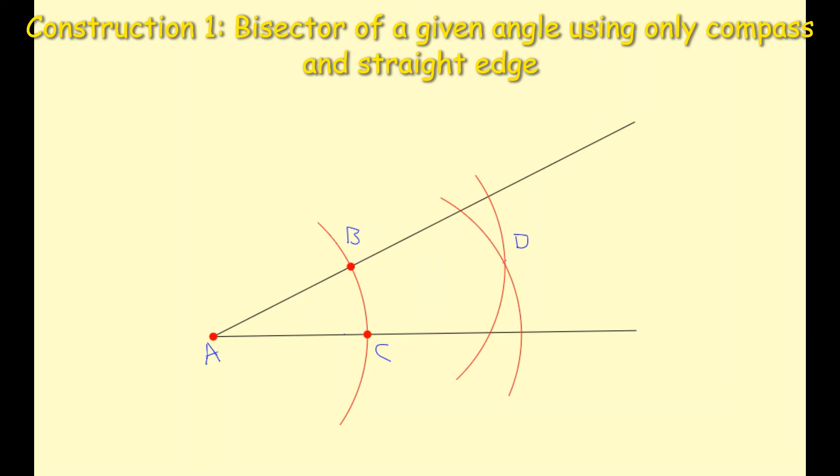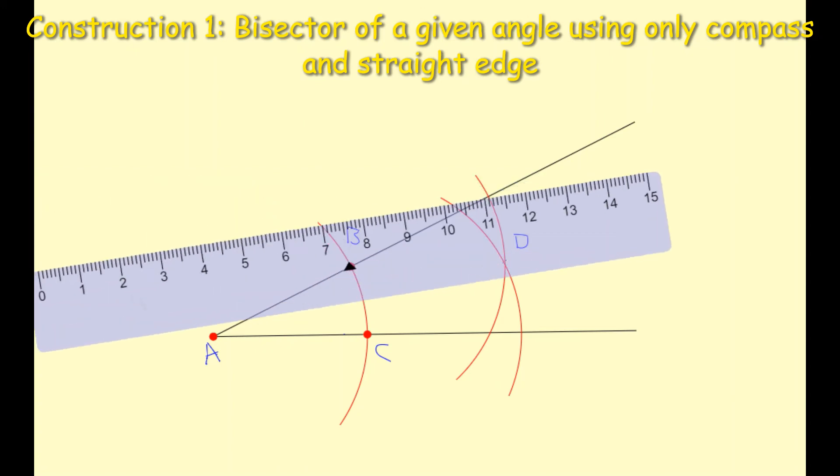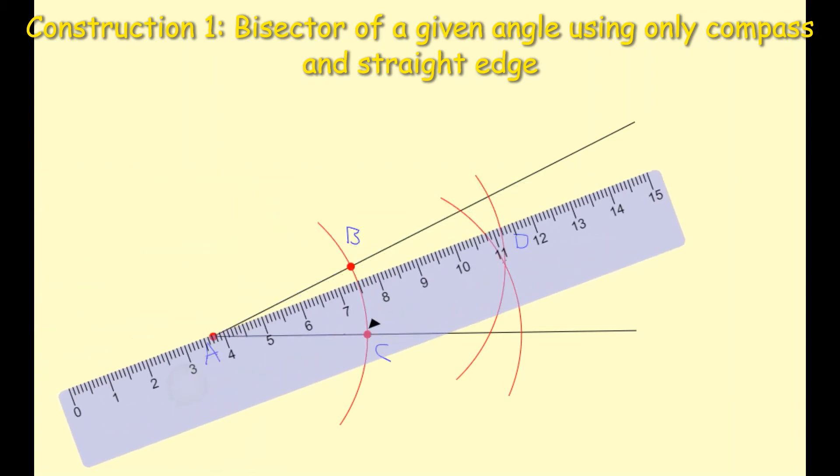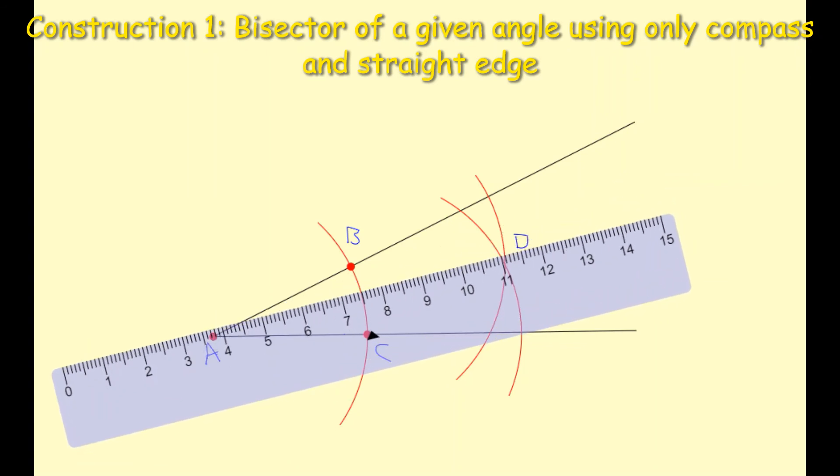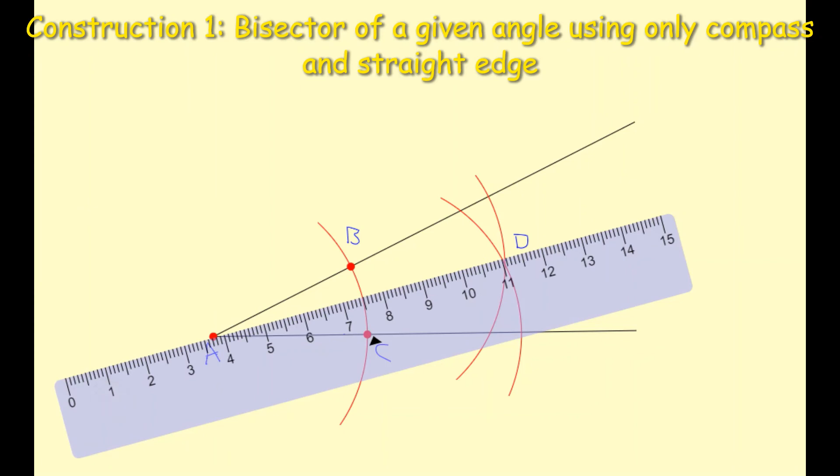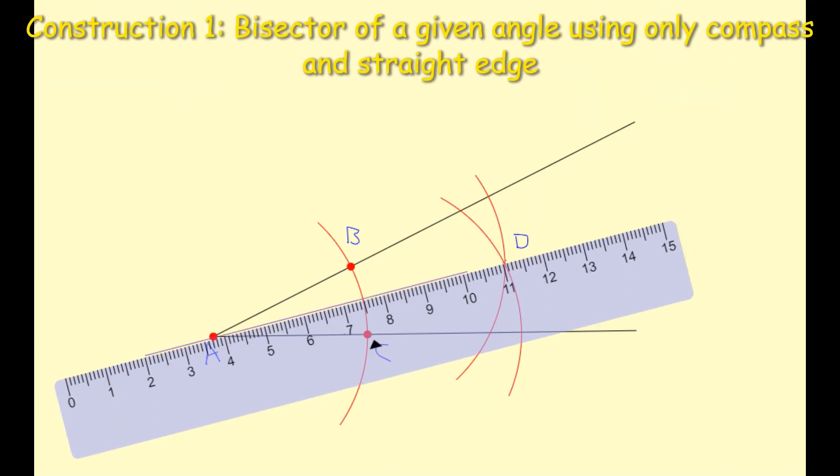Next thing I do, I take out my ruler, and I'm basically going to connect the line from point A to point D with my ruler and pencil. I'm going to move my ruler to A and through D, and connect them with a straight line. Like so.